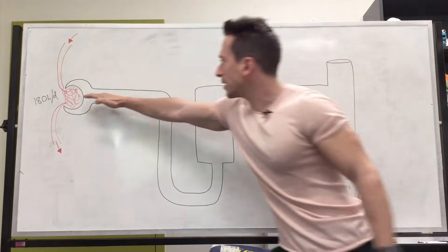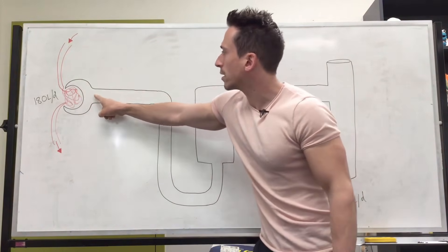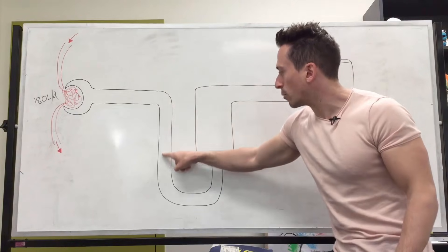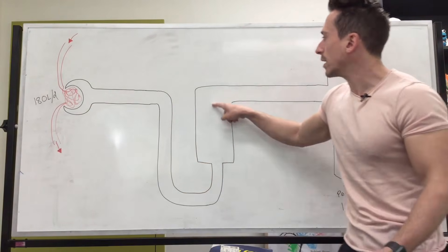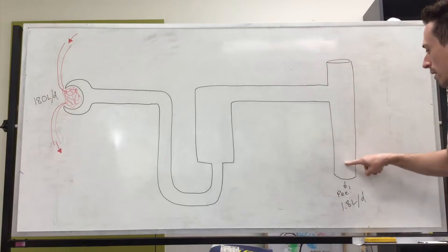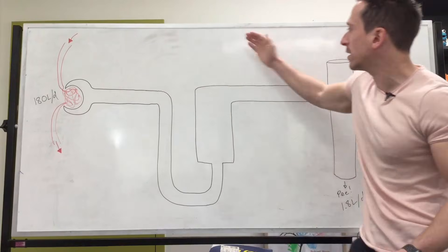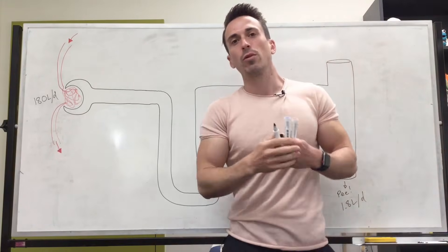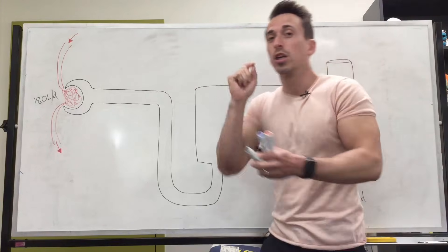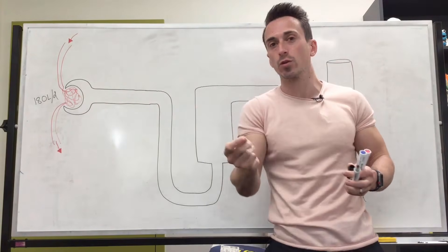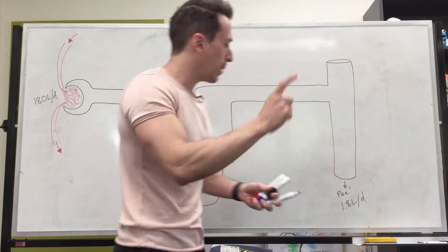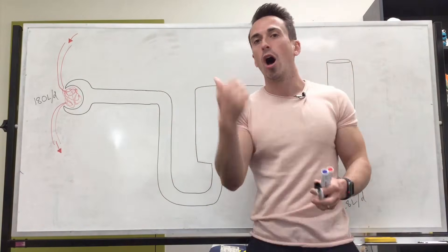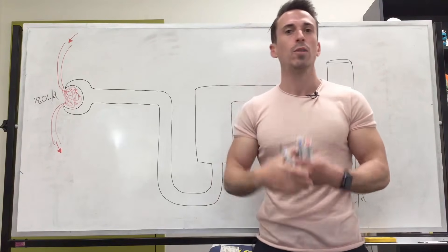So what that means is, throughout this process going from the glomerulus to the capsule — the glomerular capsule — through the proximal convoluted tubule, the descending limb of the loop of Henle, the ascending limb of the loop of Henle, the distal convoluted tubule, and the collecting duct, 99% of the stuff that gets filtered needs to be thrown back into the bloodstream. The capillaries that wrap around these tubules are called peritubular capillaries, and they reabsorb 99% of all the filtrate — so that our body maintains the appropriate concentration of ions, amino acids, glucose, urea, and all those types of things.